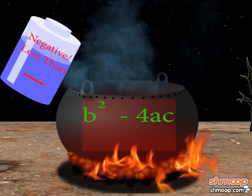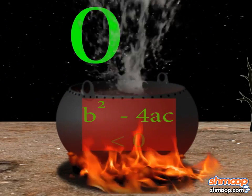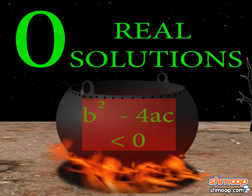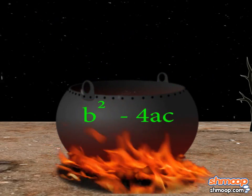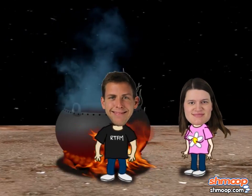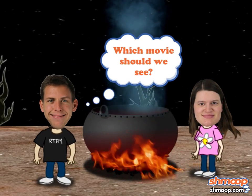But if b squared minus 4ac is negative, there are no real solutions. No real numbers will answer the problem. None. Don't even try to make one up. It won't happen. Let's get quadratic for a couple of examples. Which movie should we see?